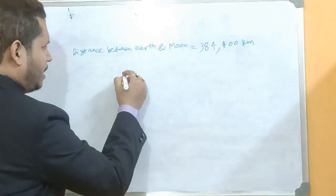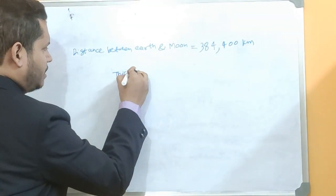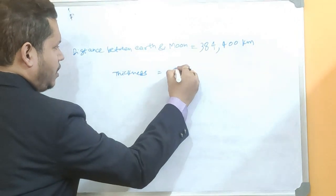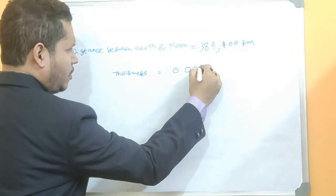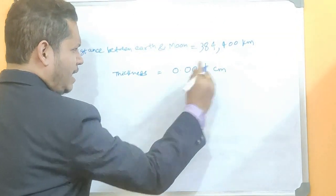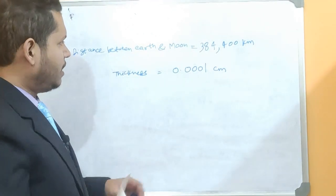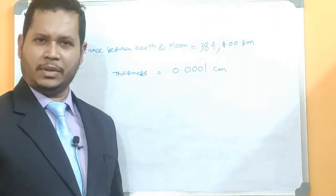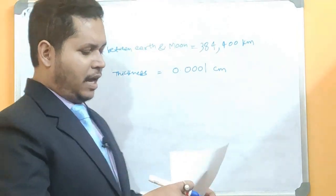Let's assume that this thickness is, say for example, 0.0001 cm. It's very less something. Okay? There is something I have taken as 0.0001 cm. Is that okay? And so now...